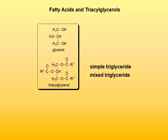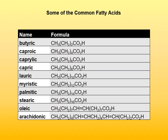Triglycerides are primary metabolites and function as long-term energy storage in living organisms. Some of the most common fatty acids are shown in a table — saturated fatty acids from 4 to 18 carbon atoms. All naturally occurring fatty acids have an even number of carbon atoms, with the most commonly encountered having between 12 and 18 carbons. Oleic acid is an example of a monounsaturated fatty acid and is the most common naturally occurring unsaturated fatty acid, while arachidonic acid is an example of a polyunsaturated fatty acid.